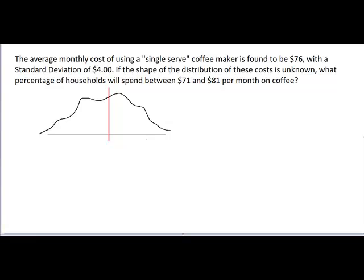What I've given us here is a situation where we know that the average monthly cost of using one of those single serve coffee makers is found to be $76 with a standard deviation of $4. But we don't know the shape of the distribution.